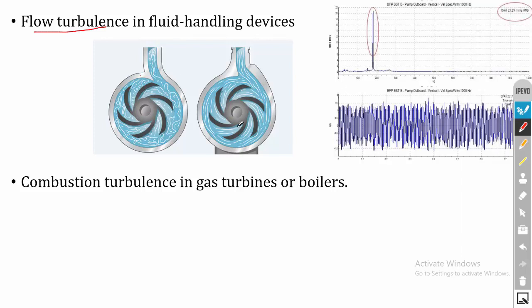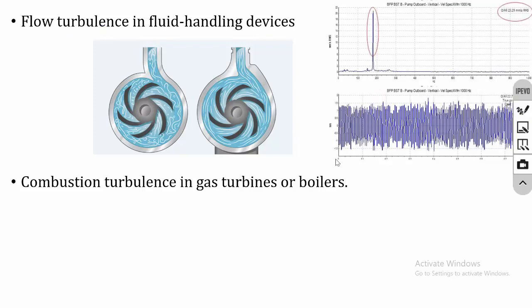This is the time domain signal for a turbulent pump — the amplitudes are high. If you convert this time domain signal into a frequency domain signal using fast Fourier transform, where the x-axis is time and y-axis is amplitude in the time domain, you can see a tall peak in the frequency domain because of the flow turbulence. The last internal force is combustion turbulence in gas turbines or boilers. During combustion, turbulence takes place and vibrates the gas turbine or boiler. These are all the internal forces that generate vibration.